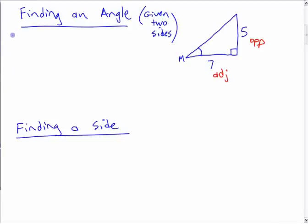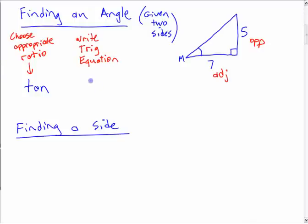So if you want kind of steps or how to think about it here: choose appropriate ratio. Choose appropriate ratio. So for us that's tangent, right, because we have opposite and adjacent. Number two, you got to write some kind of a trig equation. Write trig equation. This is what a trig equation looks like: tangent of something equals something over something else. That's a simple trig equation from a right angle triangle.